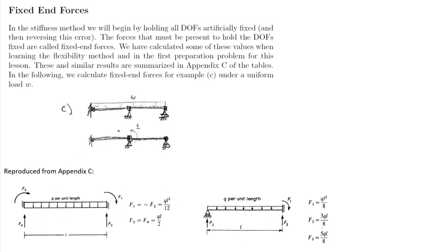We have one more building block before we do an example that illustrates the stiffness method. We'll start by noting that in the stiffness method, the strategy is to hold all degrees of freedom artificially fixed and then reversing this error.